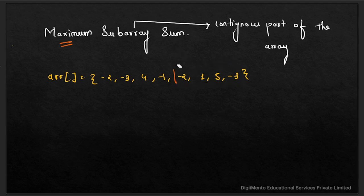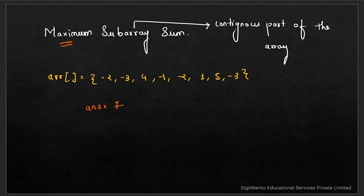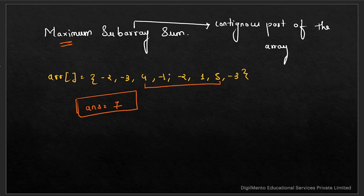If we take the subarray from -3 through 5 (indices covering -3, 4, -1, -2, 1, 5), the sum is -3 + 4 = 1, then 0, -2 becomes -1, plus 5 gives 7 — wait, from index of 4: 4 - 1 = 3, 3 - 2 = 1, 1 + 1 = 2, 2 + 5 = 7. So the maximum subarray sum is 7, which we need to return.